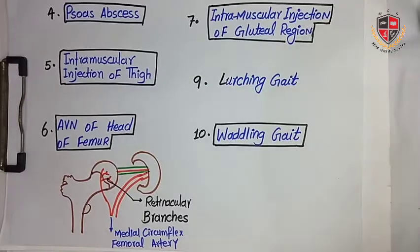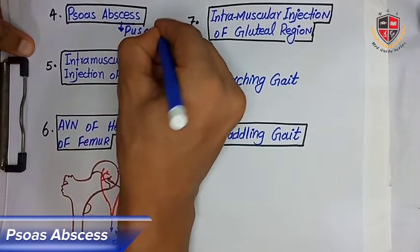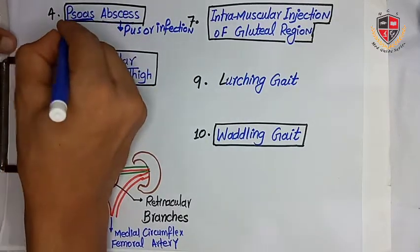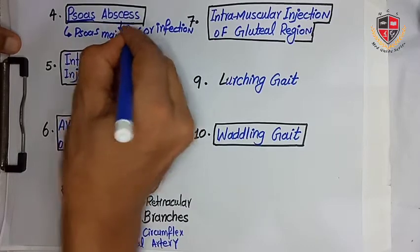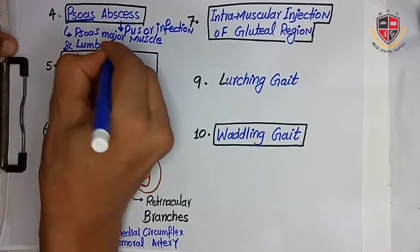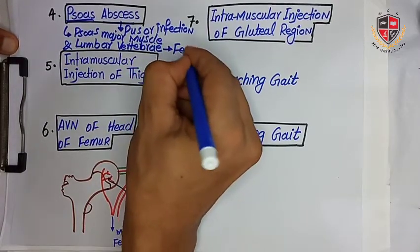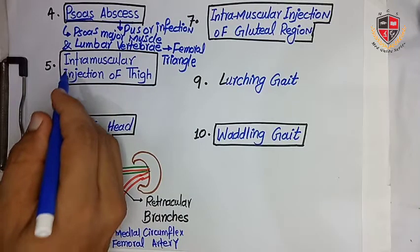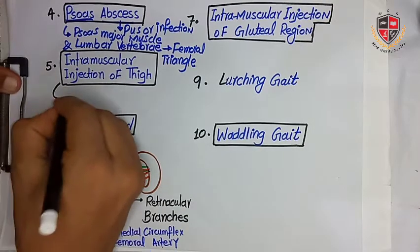The next clinical is a psoas abscess. An abscess is an infection or pus formation. The psoas abscess forms between the psoas major muscle and the lumbar vertebrae. It originally forms in the lumbar vertebrae and tracks down between the psoas major muscle and lumbar vertebrae, entering into the femoral canal. Mistakenly, it may be associated with swollen lymph nodes of the femoral triangle.